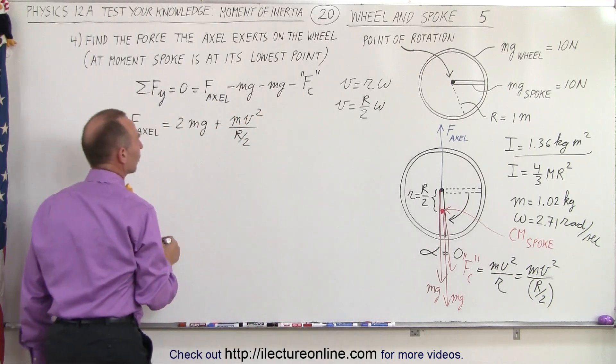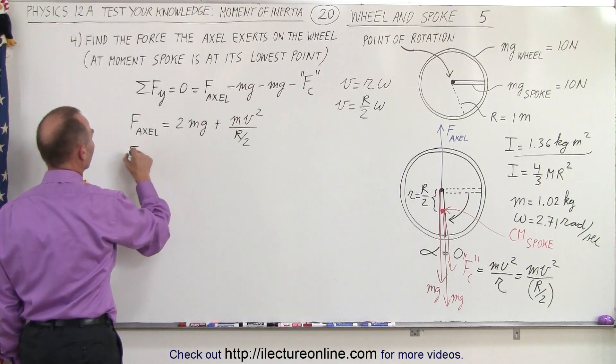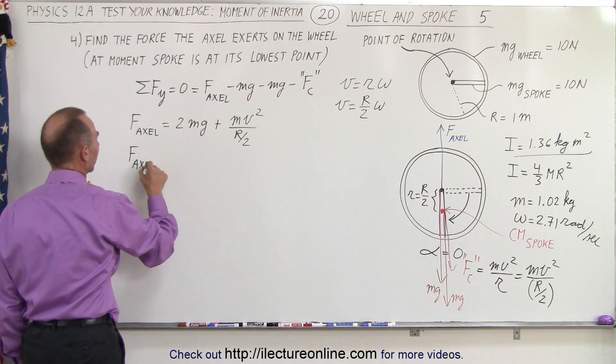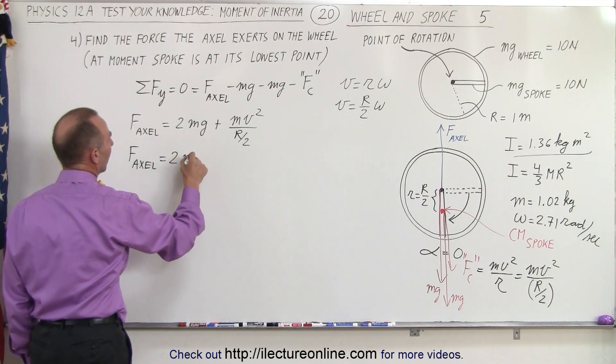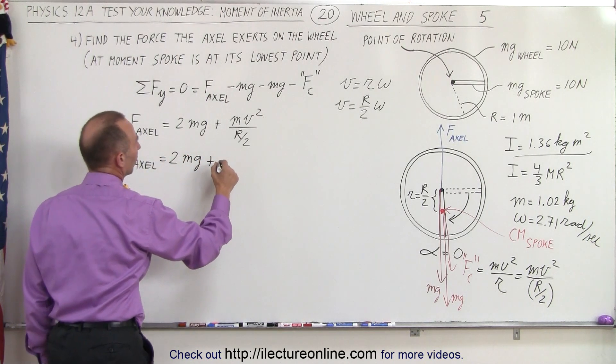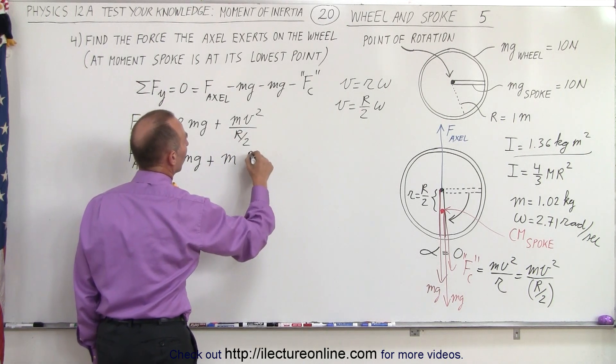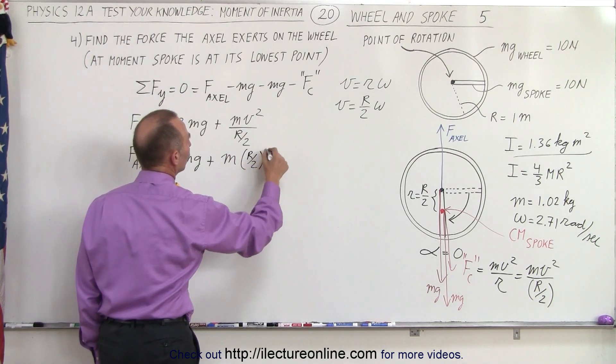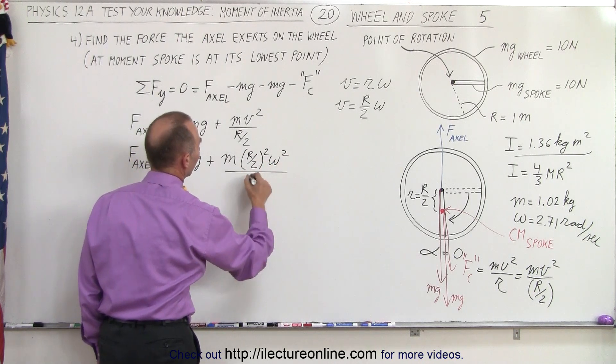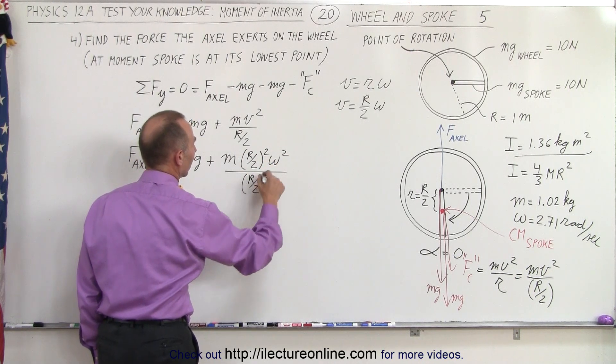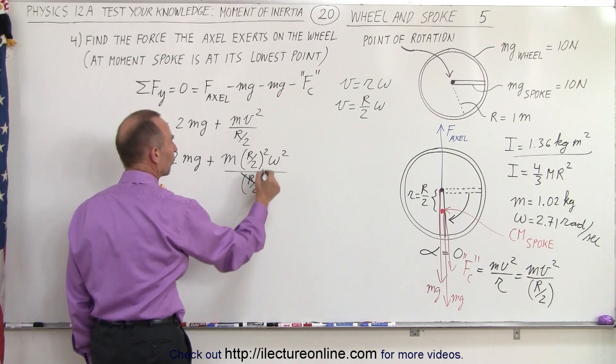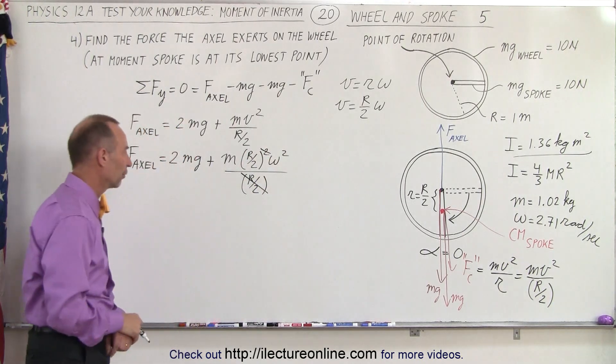So let's go ahead and do that. We have the force of the axle is equal to 2mg plus m times v squared, which would be r over 2 quantity squared times omega squared, divided by r over 2. And you notice that this r over 2 cancels out with that r over 2.